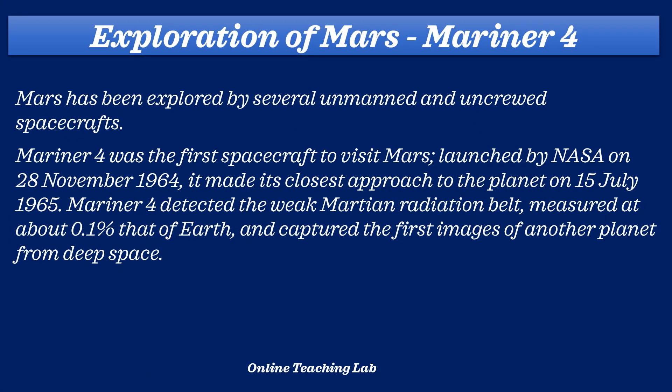Mars has been explored by several unmanned and uncrewed spacecrafts. The first spacecraft was Mariner 4. Mariner 4 was the first spacecraft to visit Mars, launched by NASA on 28 November 1964. It made its closest approach to the planet on 15 July 1965. Mariner 4 detected the weak Martian radiation belt, measured at about 0.1% that of Earth, and captured the first images of another planet from deep space.